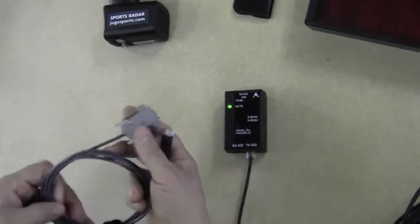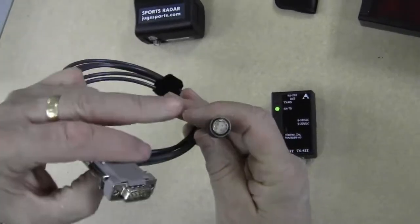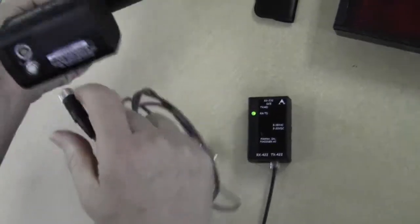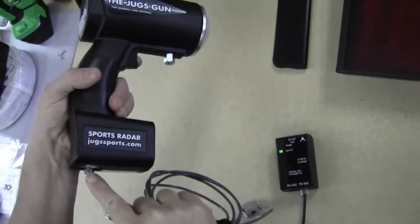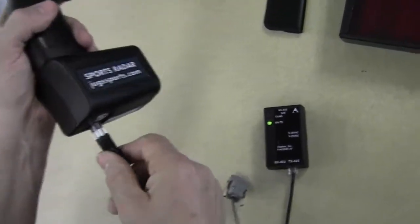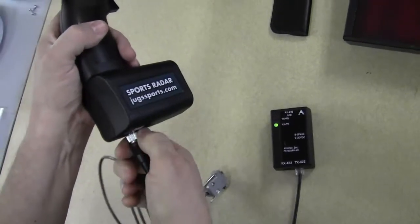Now we have a cable here. The cable has a DB9 connector on one end and a 4-pin circular connector on the other end. We're going to connect the radar gun, which has two connectors on it. The one that protrudes is the data connector, and the other one is the power connector. So we're going to plug it in, twist it until it's tight.